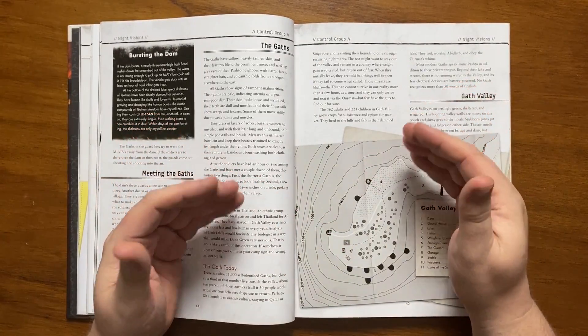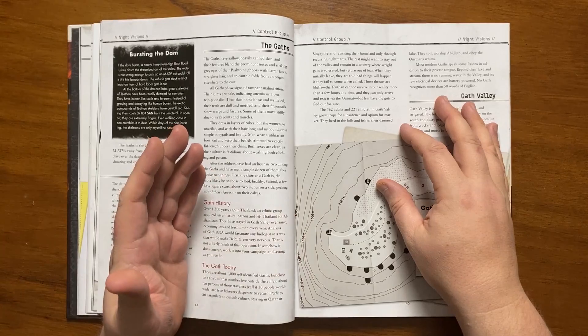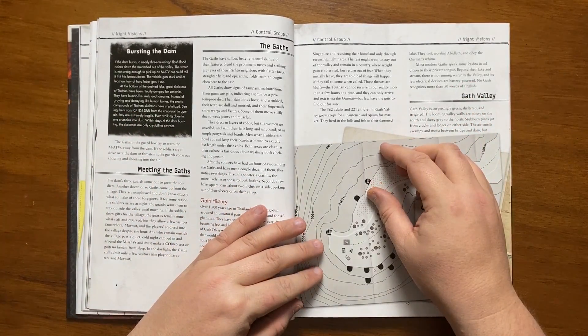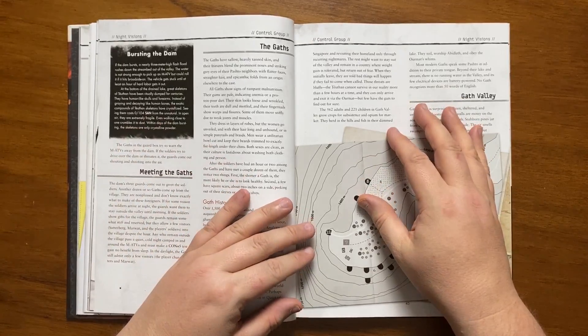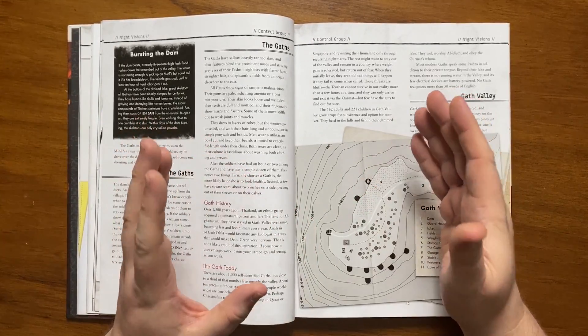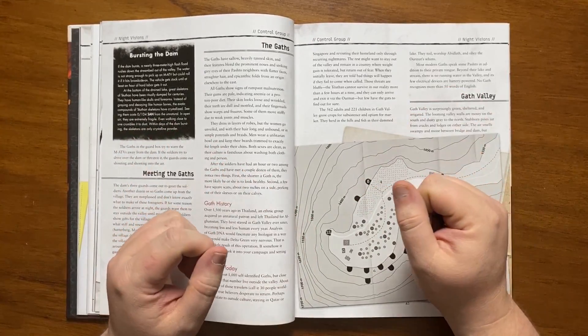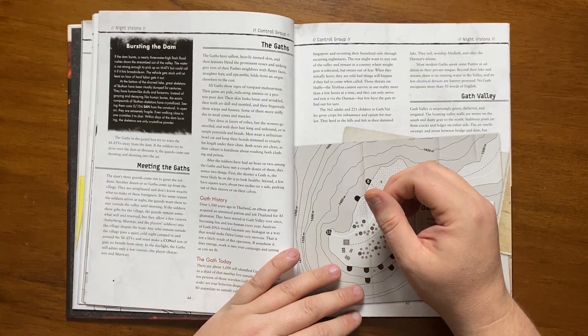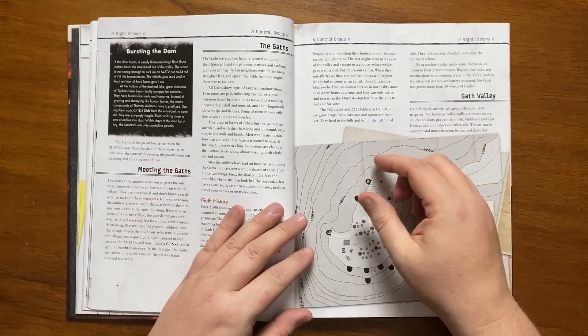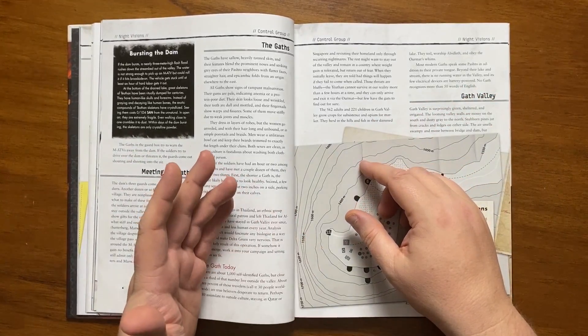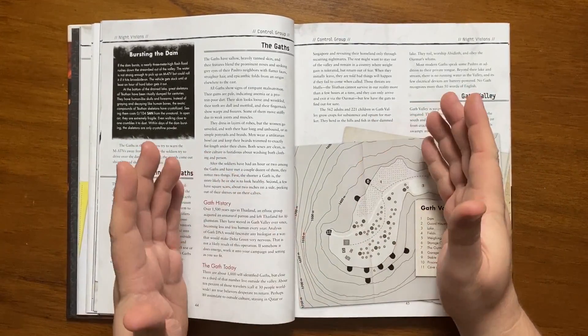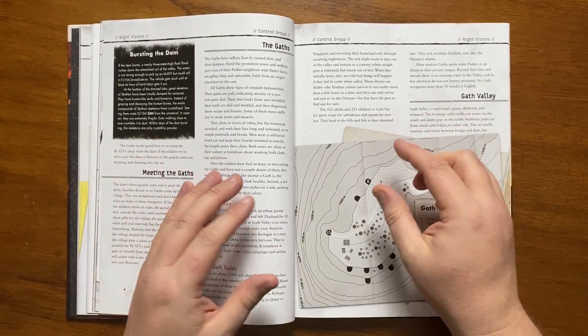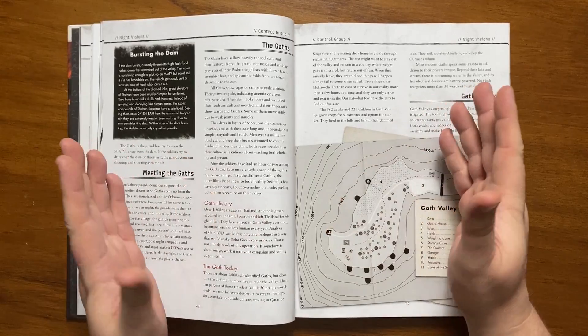After milling about with the villagers the soldiers will notice that the shorter the Gath the healthier they look and a few have square scars around two inches aside on their arms and legs. The truth about the Gath is that around 1500 years ago in Thailand an ethnic group acquired an unnatural patron and left for Afghanistan, living in Gath Valley ever since. Their DNA would be very interesting to a geneticist. In actuality there around 1000 Gath though around a third of them live outside the valley living in Qatar or Singapore. Only around 10% of those want to return. When they leave they are told that bad things will befall them if they fail to return when summoned, though this is untrue.